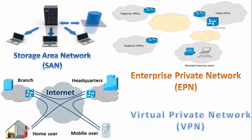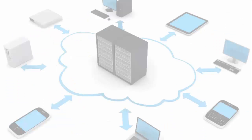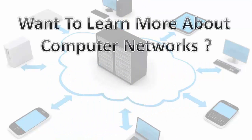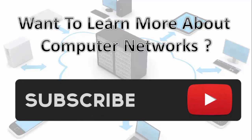And this is Virtual Private Network — VPN. These are private networks that go through the internet, but they are encrypted and more secure. So these were the types of networks. If you liked this lecture, hit like, and if you want to learn more about computer networks, subscribe and share your views in the comments. Thanks for watching, goodbye.